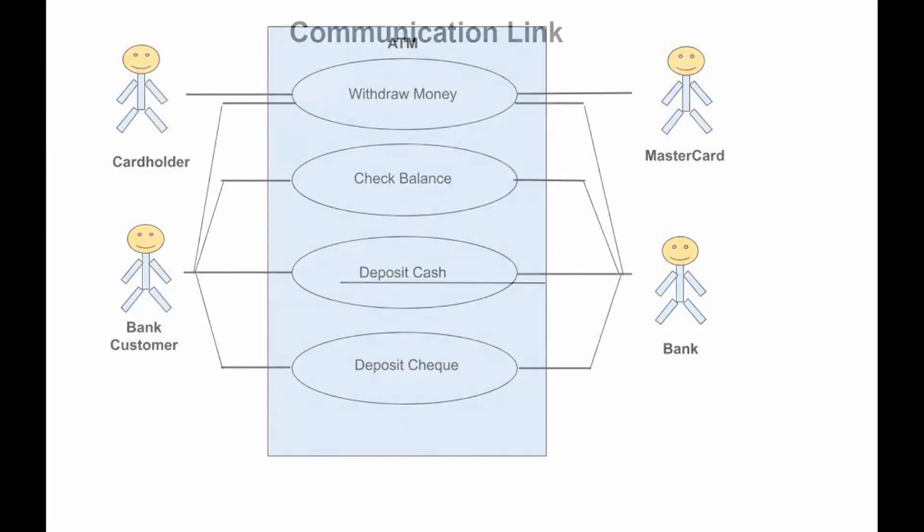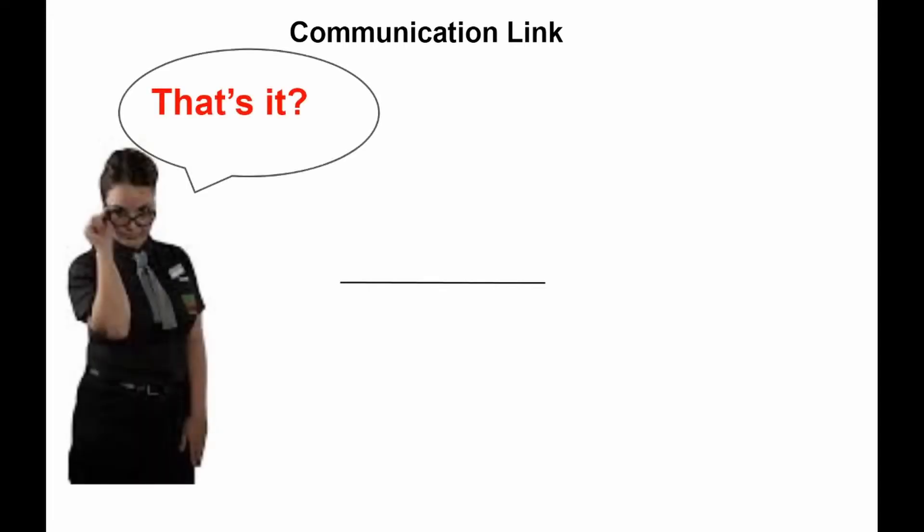Communication link. Actors can be connected with use cases via associations, indicating that the actor and the use case communicate with each other through messages. This is graphically shown with a solid line.